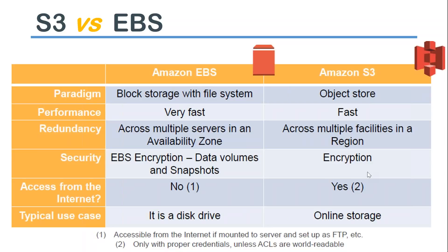Regarding security, there is not much difference — both EBS and S3 have encryption available, so that cannot be a deciding factor. You can encrypt or decrypt data in both cases. For internet accessibility, S3 supports it while EBS does not directly. With S3 you can configure your bucket with public policies so all objects can be served as a static website or made readable by everyone. With EBS, you need a server running a web server like HTTP, FTP, or IIS to share data with the internet.